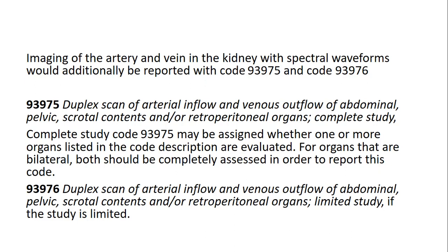The code description for 93975 involves the pelvic, aortic content, and retroperitoneal organs. For bilateral organs, both must be completely assessed to report this code — both the arterial inflow and venous outflow should be documented. If only arterial inflow or only venous outflow is documented, you cannot code the complete code; you must code the limited code 93976. Check the medical report carefully before coding 93975.